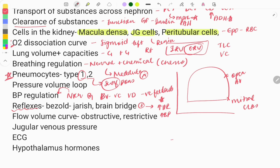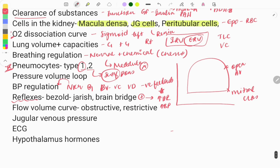The flow-volume curve: by this curve we can identify obstructive and restrictive diseases. If the curve is in the normal position it is seen in normal individuals; if there is a restrictive disease it moves to the right side; if it is obstructive it moves to the left side. Image-based questions can be asked, so you need to be able to interpret the graph.